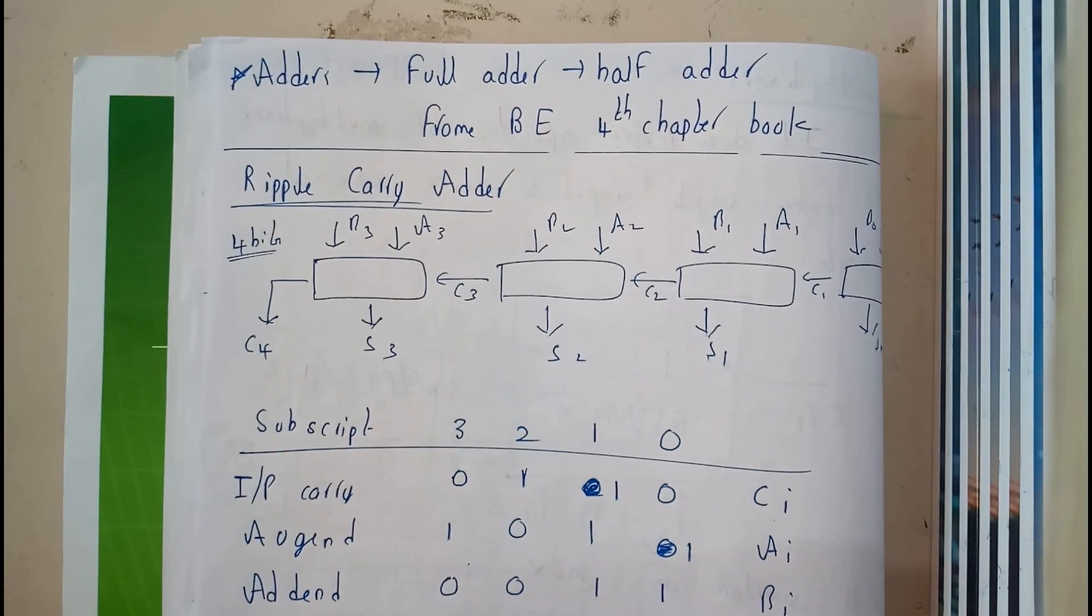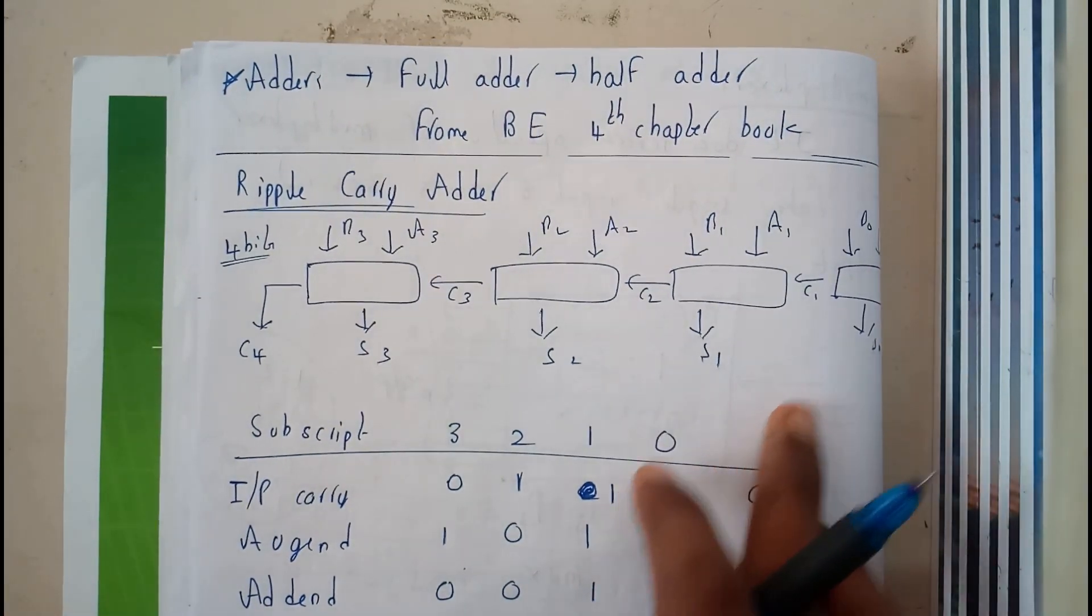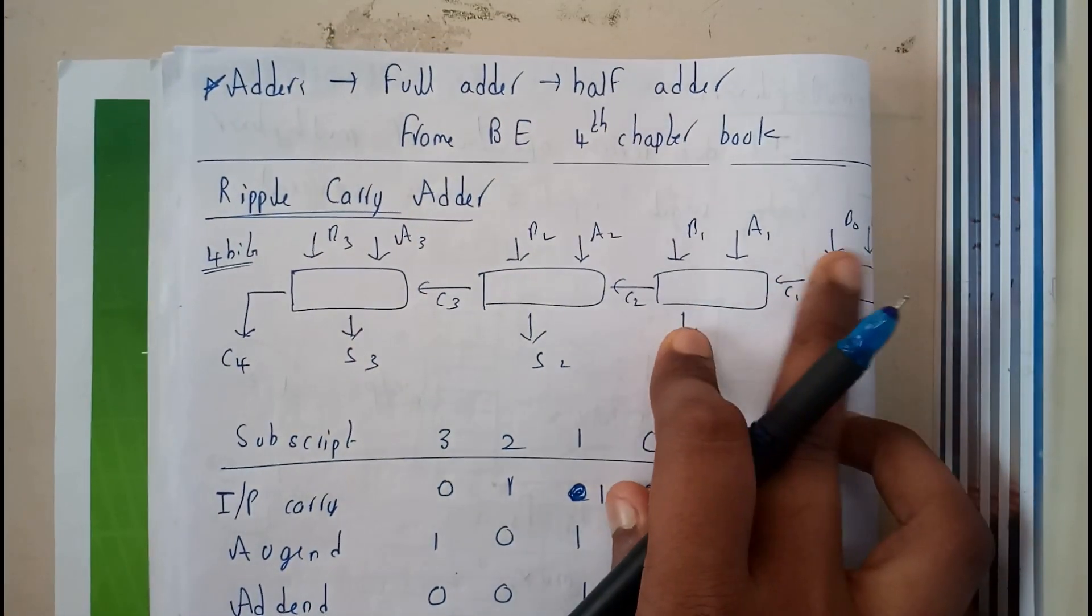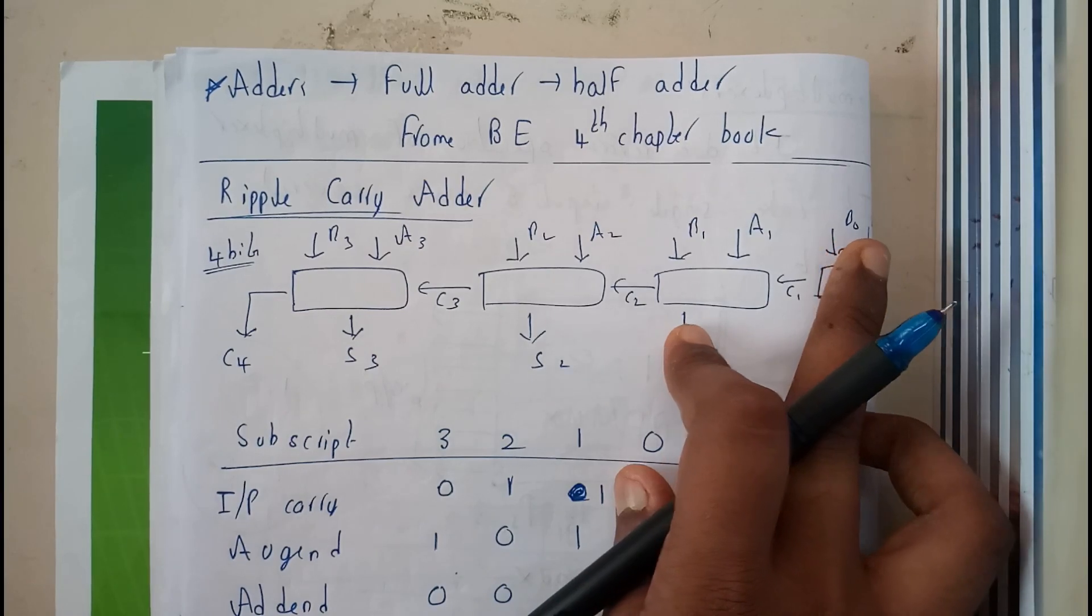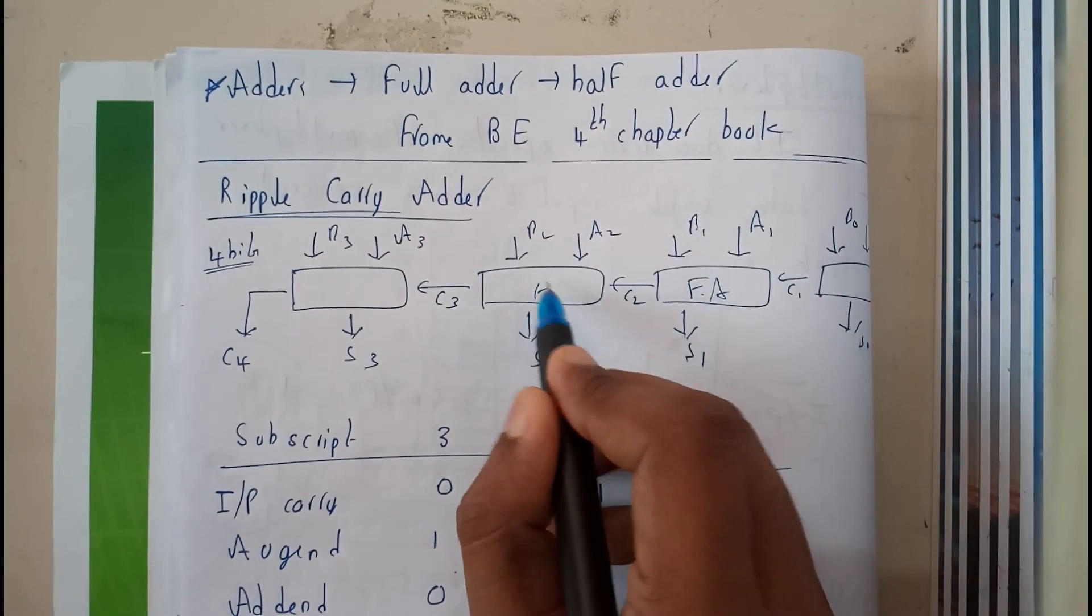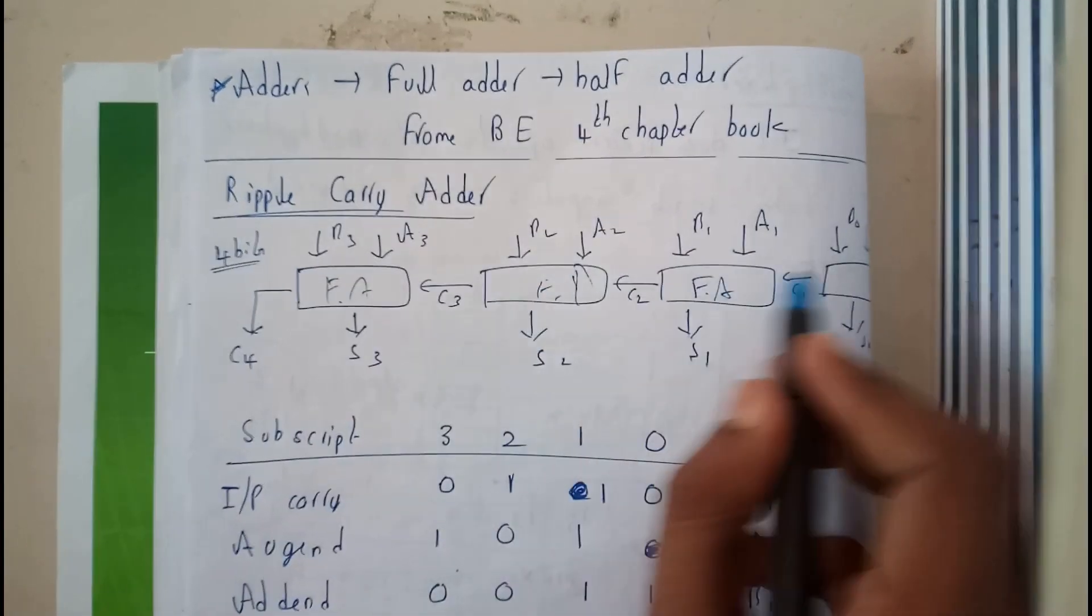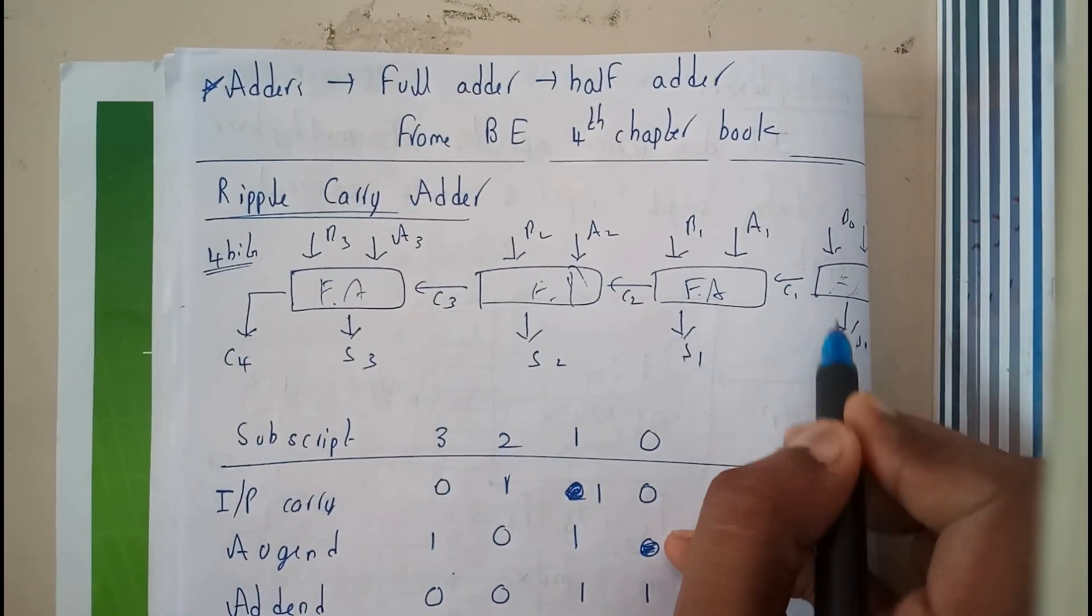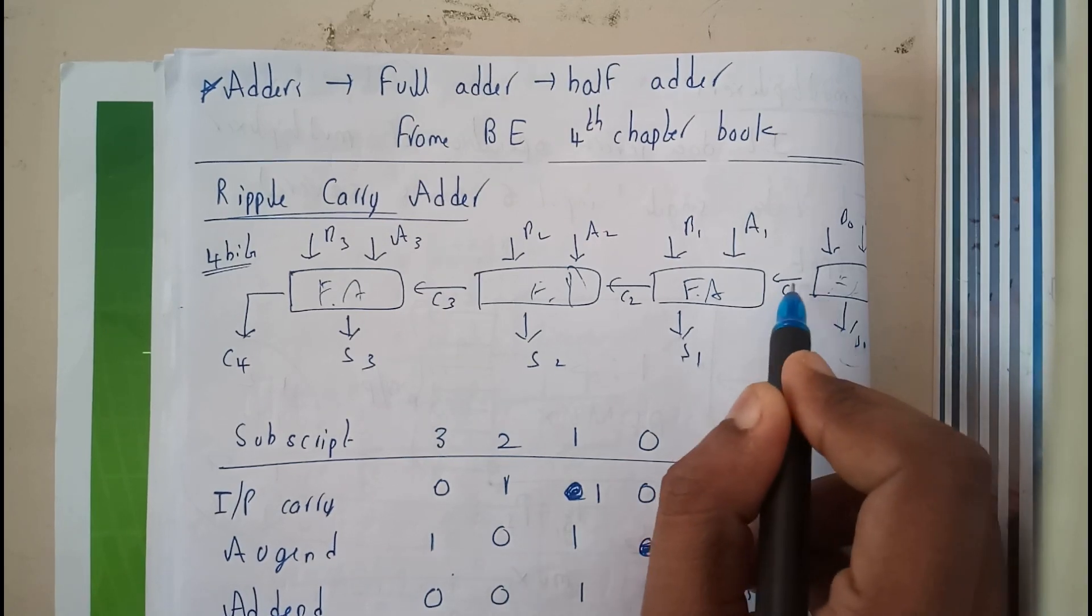Basically, Ripple Carry Adder is one in which initially we give two values. Let us assume that b0 and ba0 are the given values. In this full adder, it consists of full adders only, so the full adder will be doing the calculations and it will be dividing the sum here and carry here.